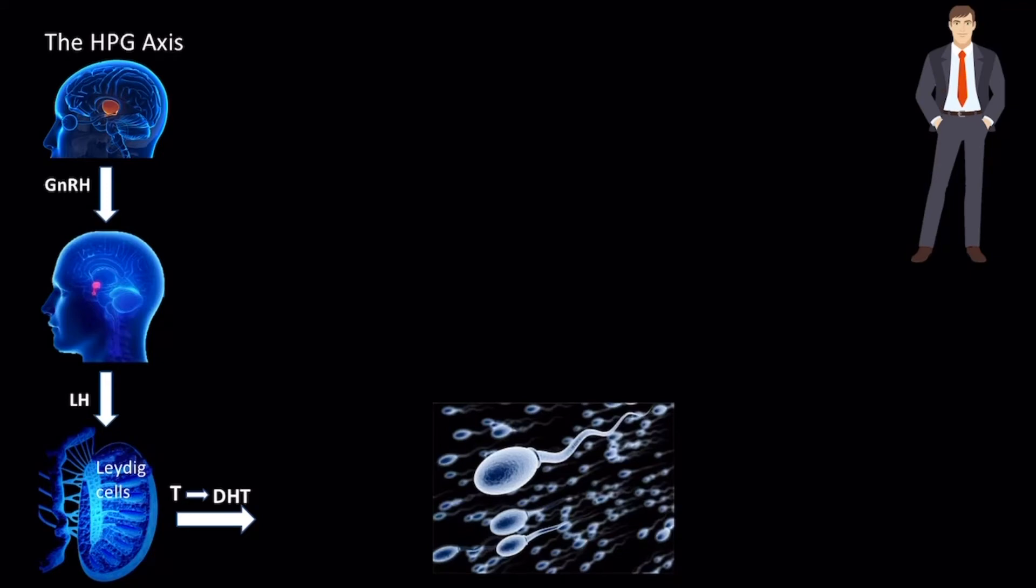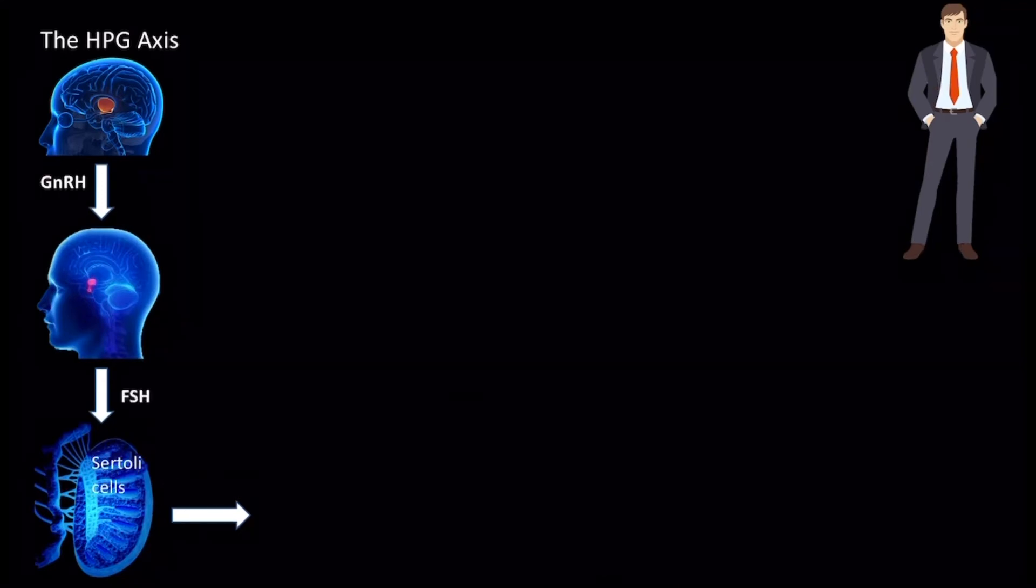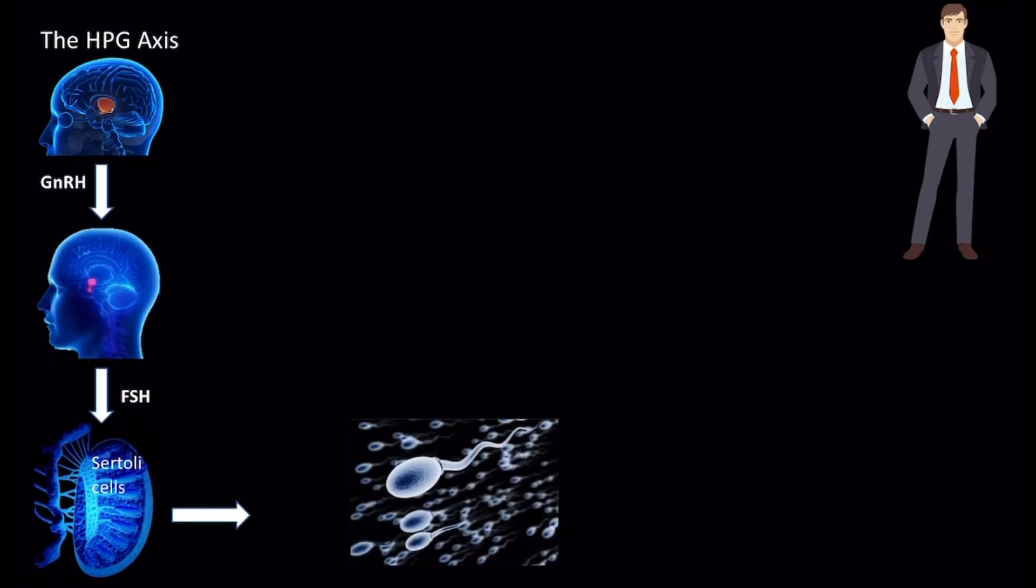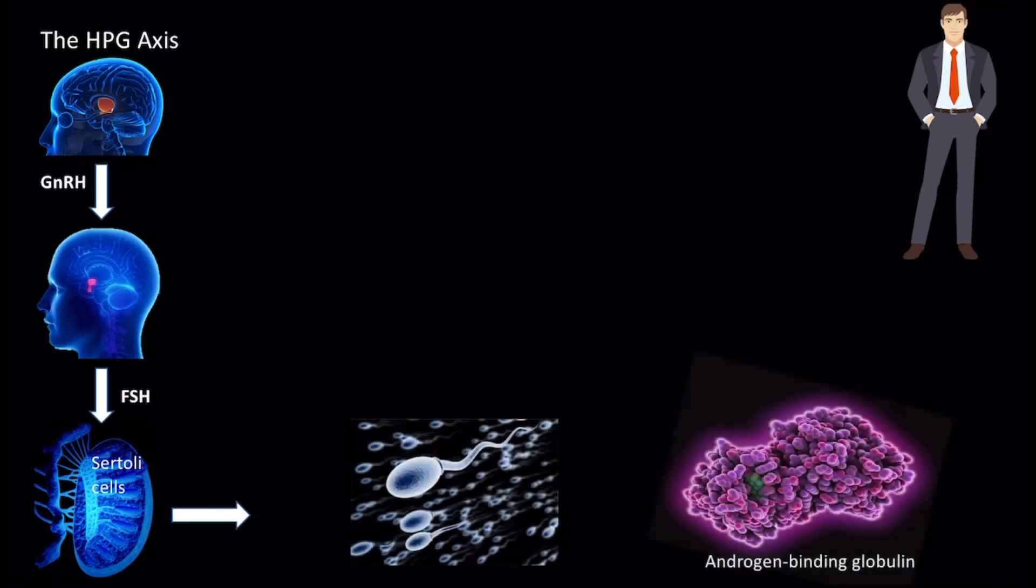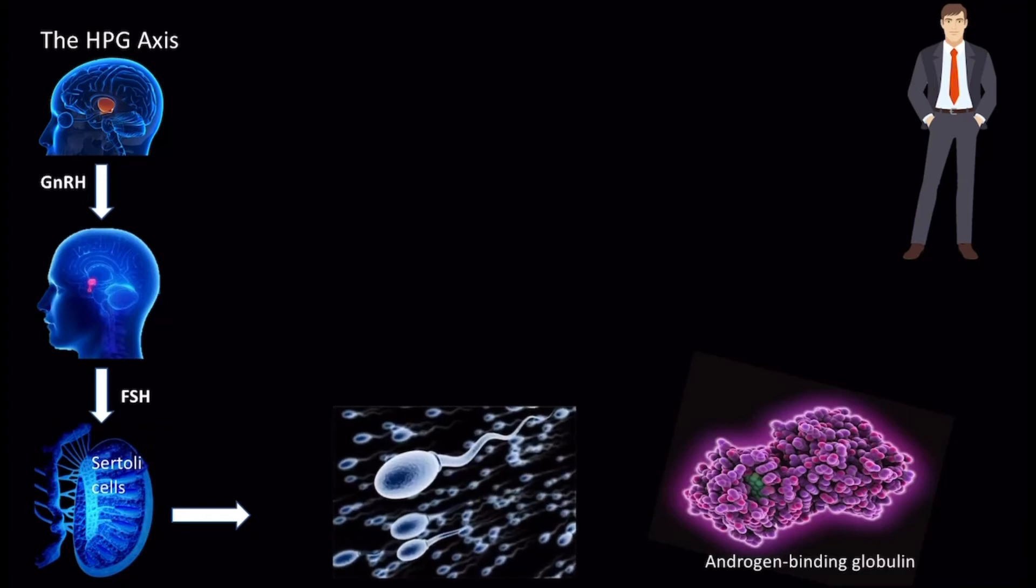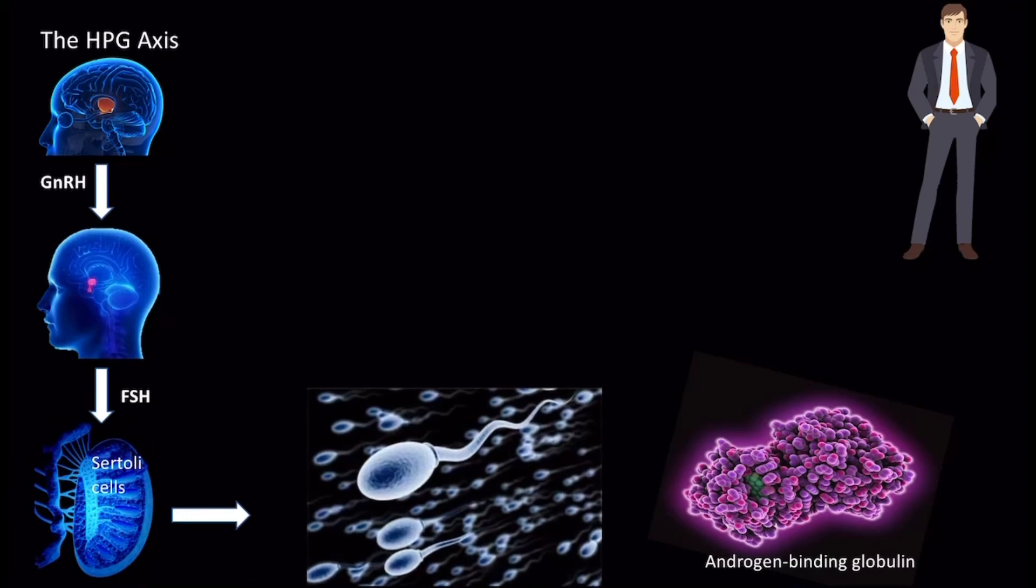Meanwhile, FSH acts on Sertoli cells to stimulate spermatogenesis and increase the production of androgen-binding globulin. Androgen-binding proteins bind testosterone and DHT to help maintain a relatively high rate of spermatogenesis.